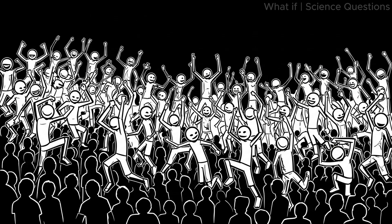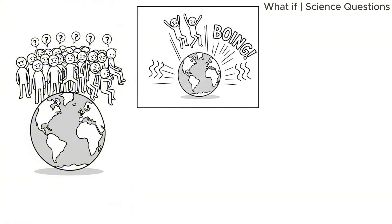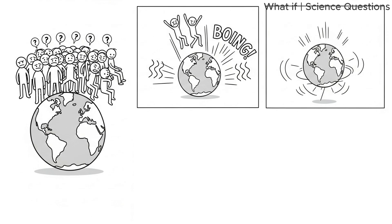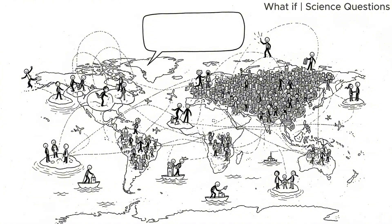After all, people jump all the time. But what if everyone, all 8 billion of us, jumped at the same time? Would it shake the Earth? Knock it off its axis? Cause earthquakes? Let's find out. First, let's do some logistics.